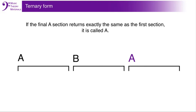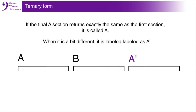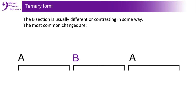If the final section returns exactly the same as the first, it is called A, but it can also be changed on its return. When it is a bit different, it is labeled A prime. The B section is usually different or contrasting in some way. The most common changes are different musical material — new melodic material, new instrumentation, a new tempo, or a new style of playing.